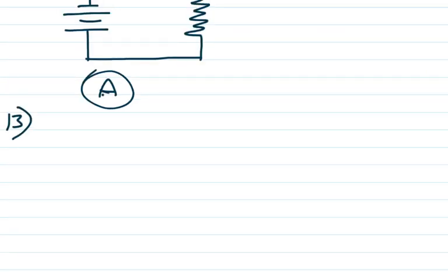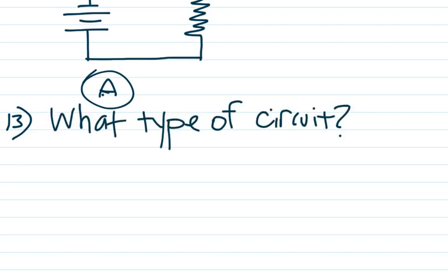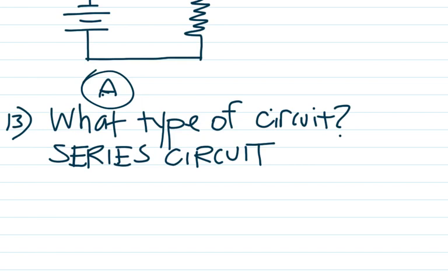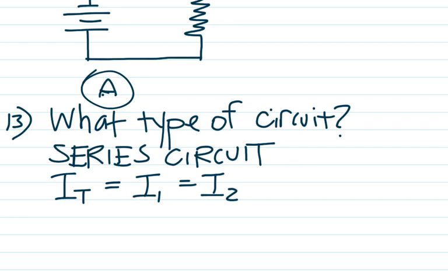With number 13, we start looking at series and parallel circuits. The first thing to do is identify the kind of circuit. This question states explicitly that the resistors are connected in series. In a series circuit, the current is the same at all points. If the current through the 2-ohm resistor is 2 amps, then the current through the 4-ohm resistor is also 2 amps. Choice B.